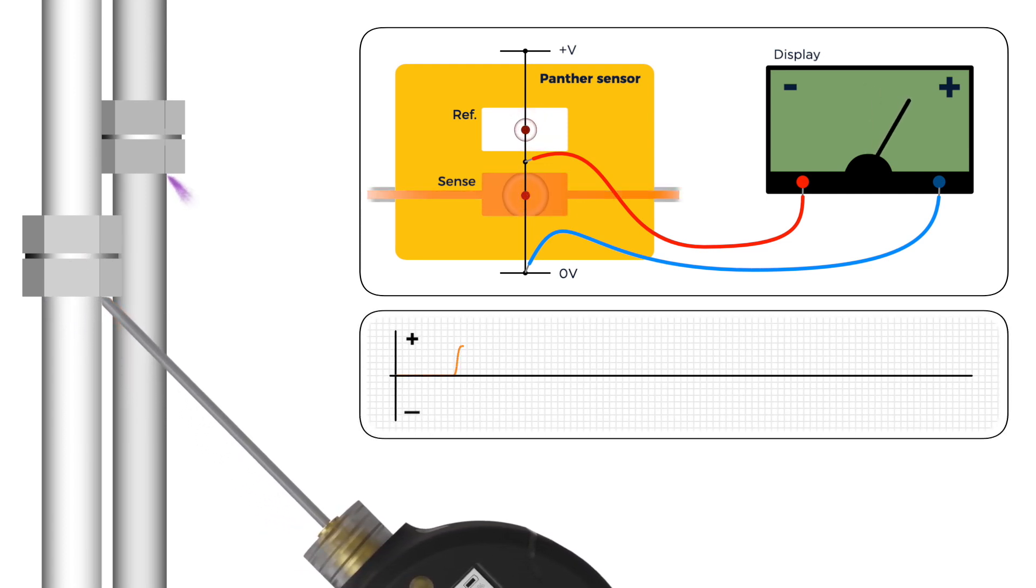It is this change in temperature and the resulting change in the thermistor's resistance that is measured and converted to a leak rate. Some gases are more thermally conductive to air and others are less conductive.